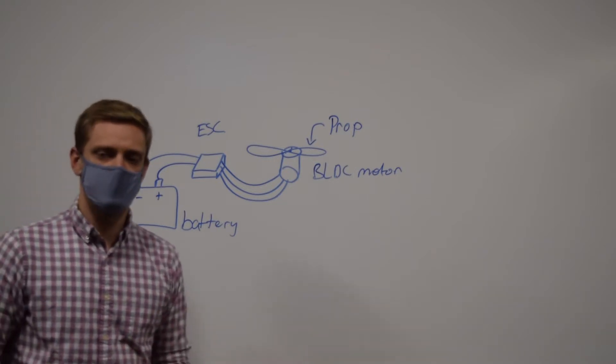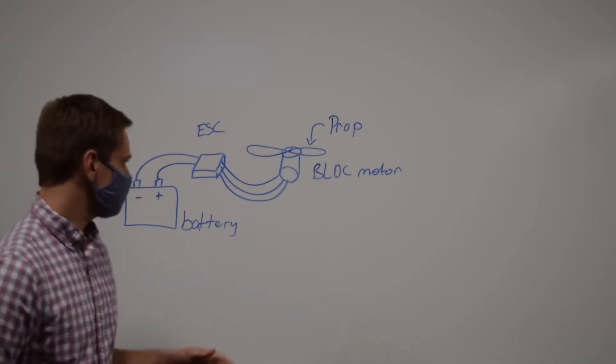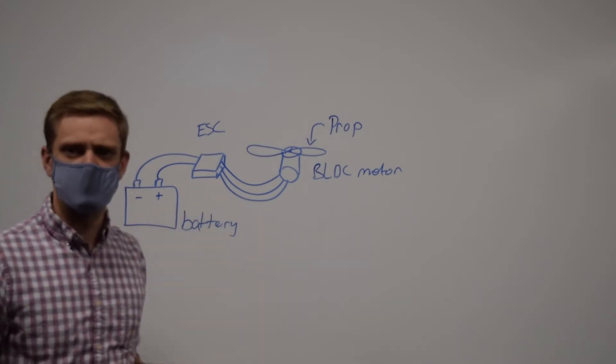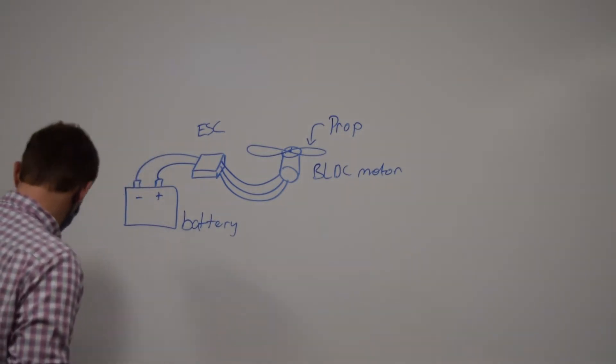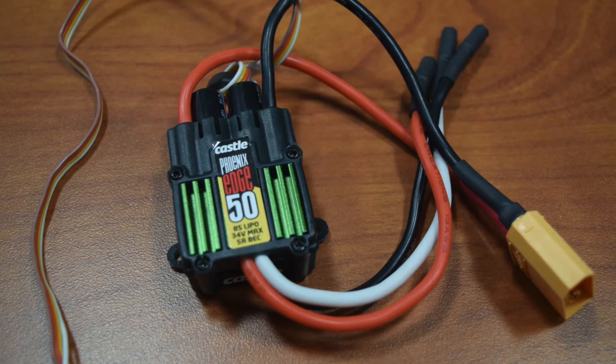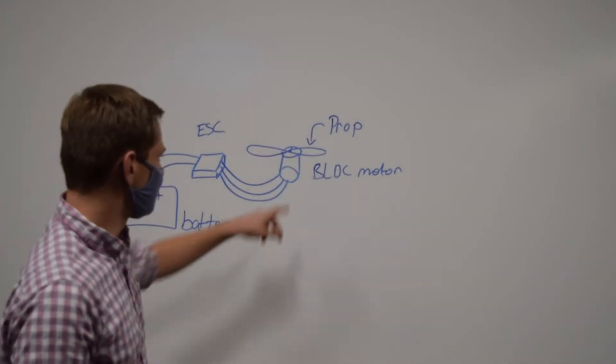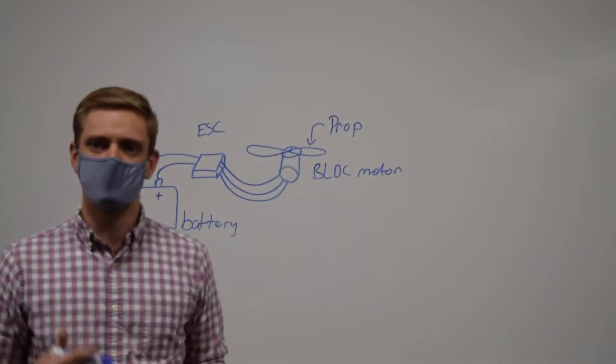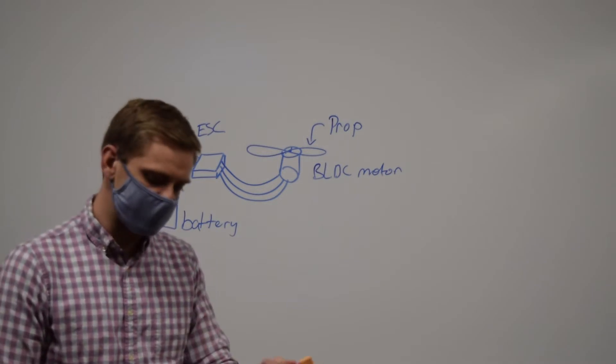If you're wanting to optimize it, it's important to understand how all these work and how they're specified. The speed controller, the only specification you have to worry about is current. I have one here and you can see this is rated for 50 amps. You just need to make sure that your motor and propeller when told to reach certain speeds are not going to pull more than that.